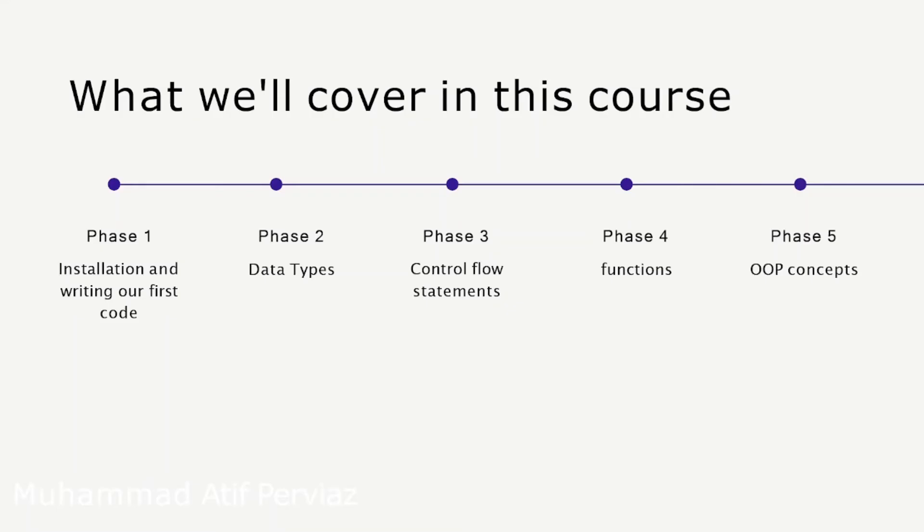So what we will cover in this course — we will cover these phases. In phase 1, we will discuss installation and writing our first code. In phase 2, we will discuss data types. In phase 3, control flow statements. In phase 4, functions — what are the functions in Dart. In phase 5, OOP concepts: classes, objects, inheritance, polymorphism, and encapsulation.